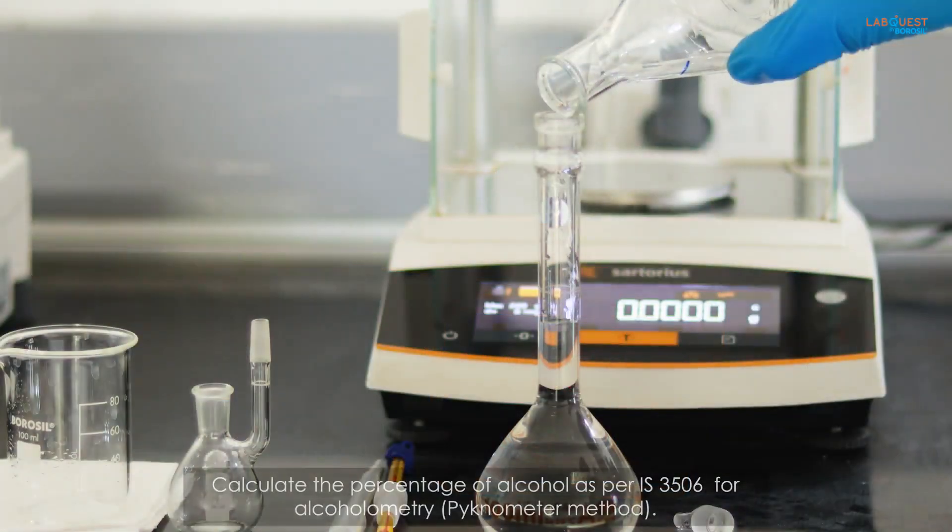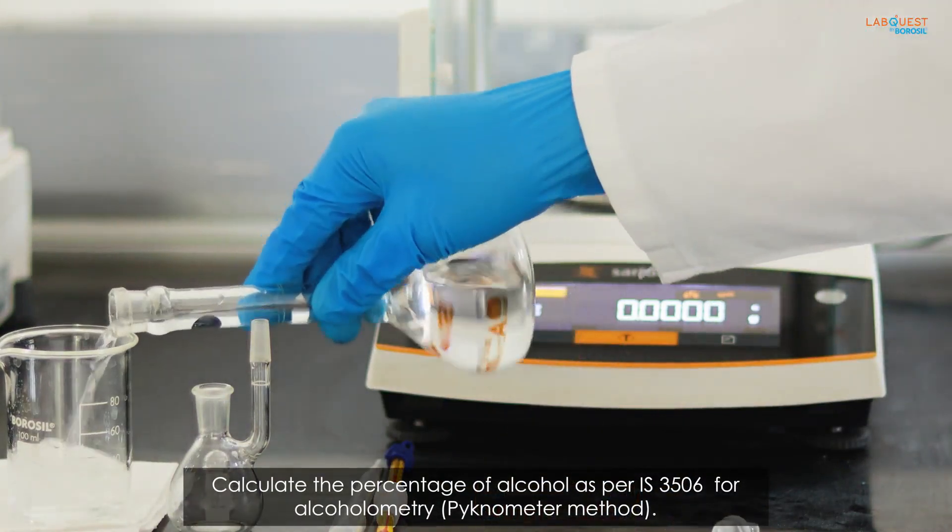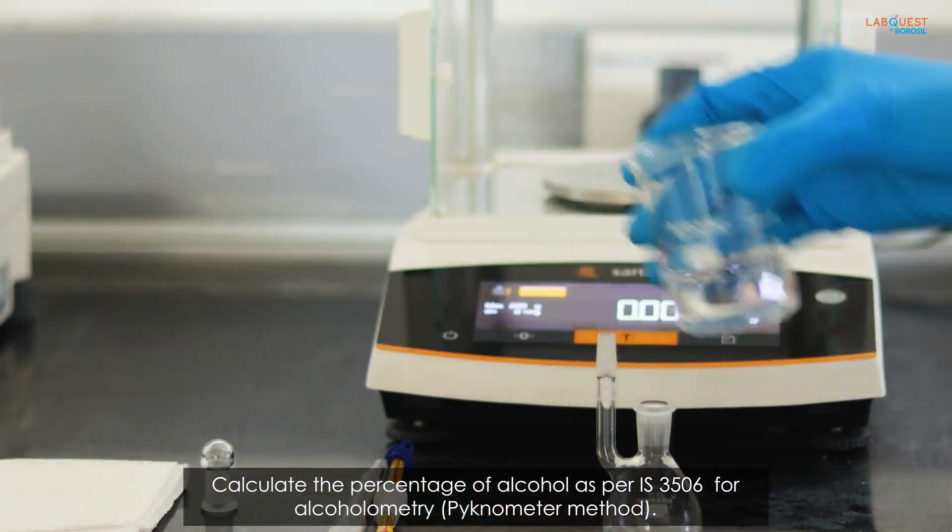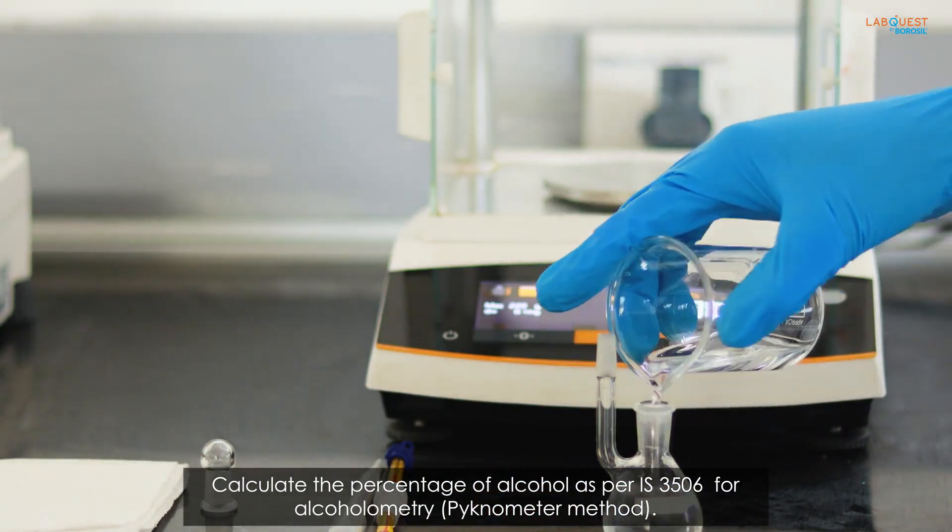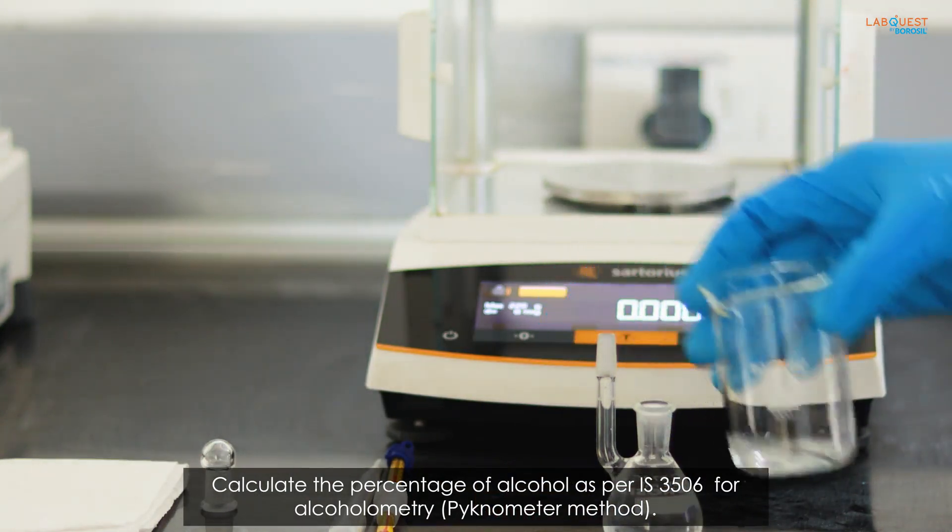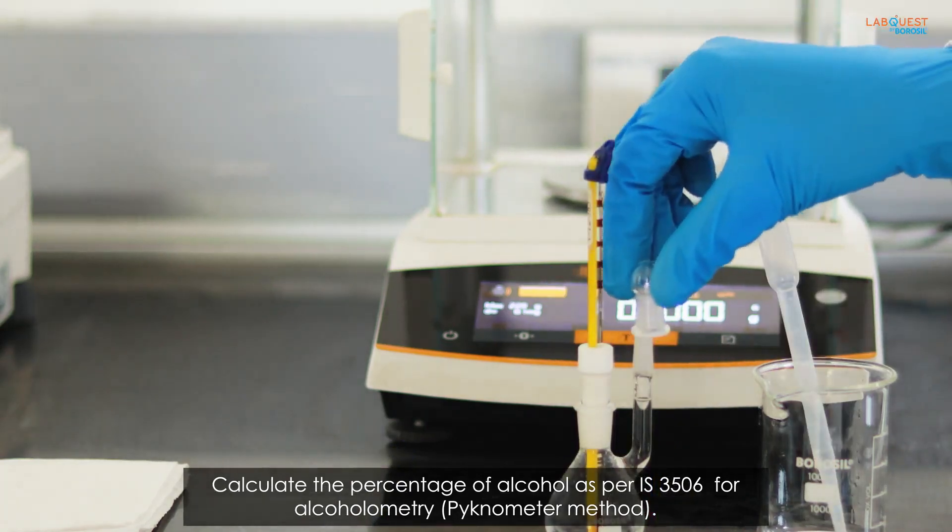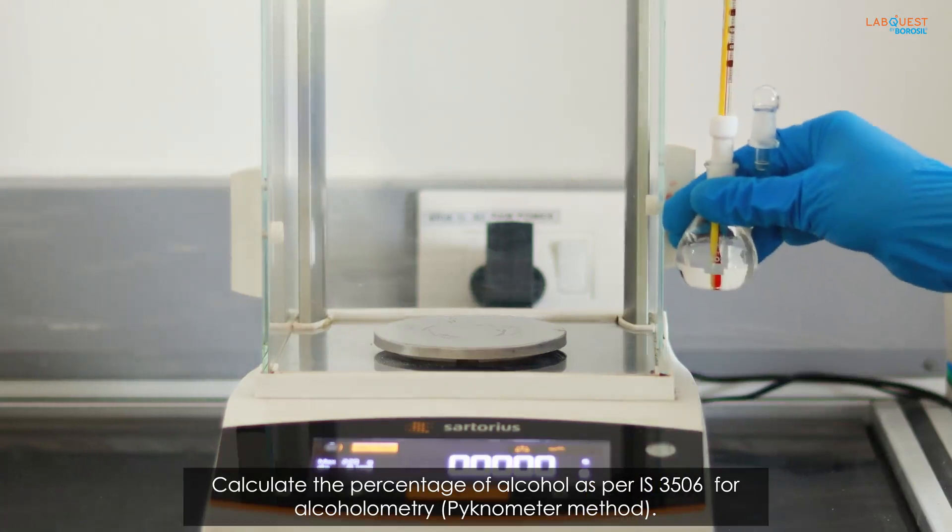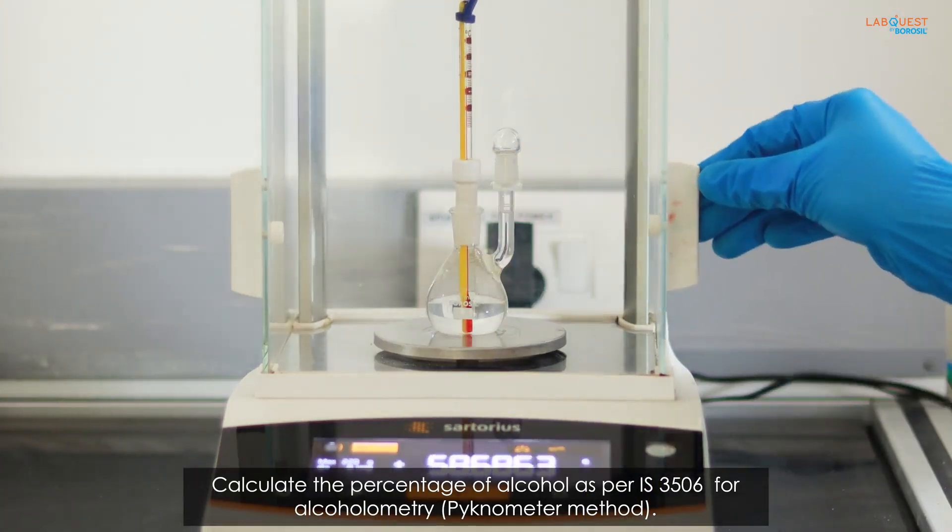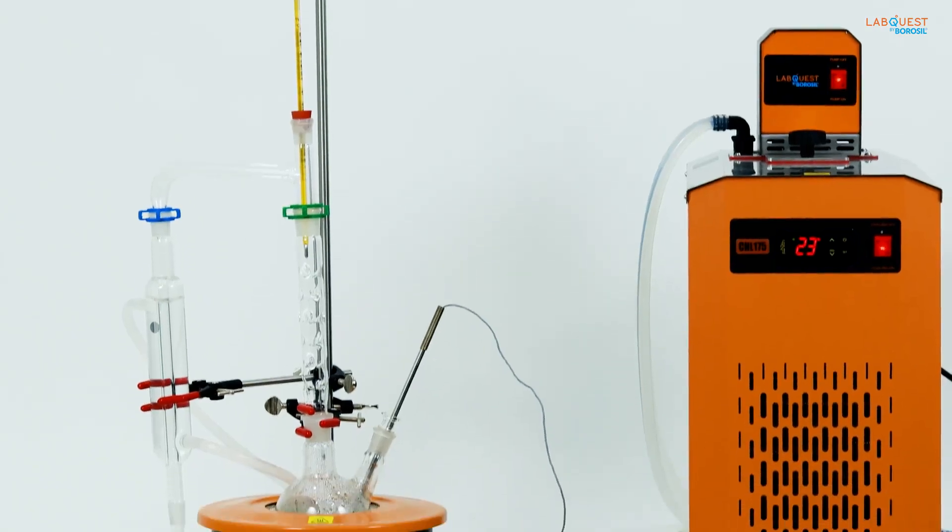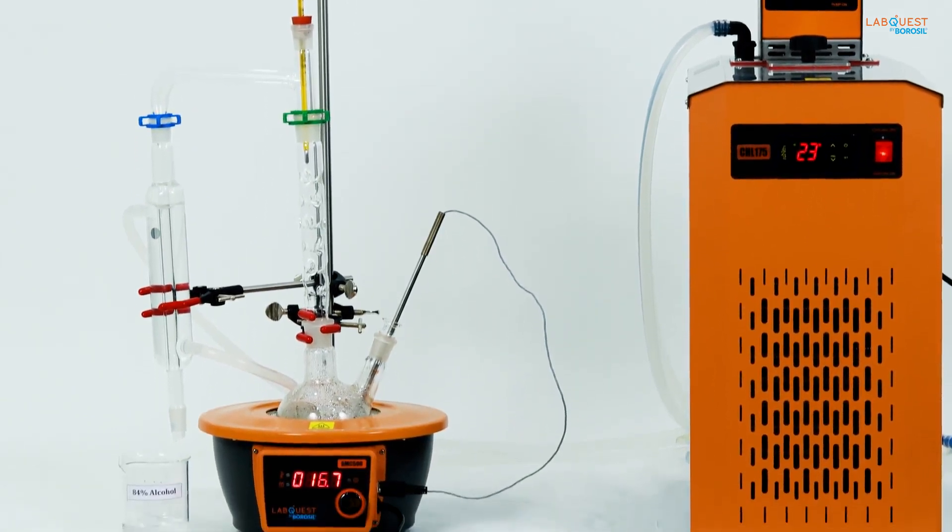Calculate the percentage of alcohol as per IS3506 for alcoholometry by pycnometer method. Here we get 84% of alcohol using accurate temperature.